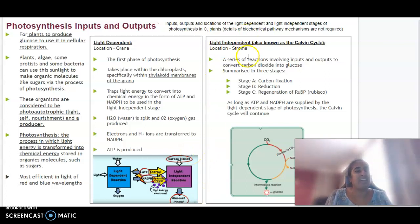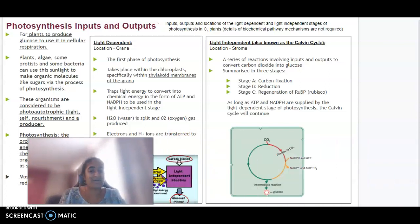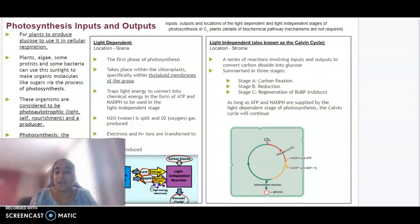The light independent stage happens in the stroma of the chloroplast. The Calvin cycle is a bit more complex. There are a series of reactions occurring involving different inputs and outputs to convert carbon dioxide into glucose. Our input is carbon dioxide and our output is glucose. There are three major stages: carbon fixation, reduction, and regeneration of rubisco. As long as ATP and NADPH are continuously supplied by the light dependent reaction, the Calvin cycle will continue. We can see that cycling of coenzymes happening with NADPH and ATP.